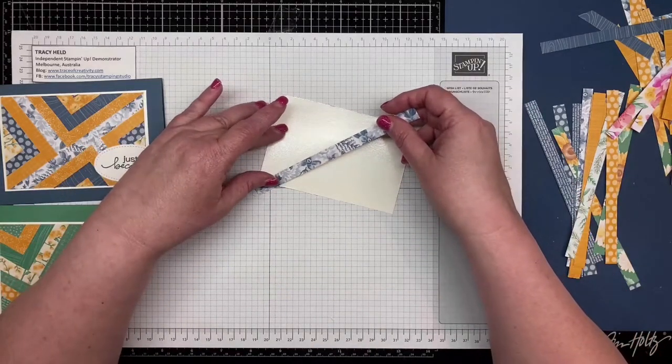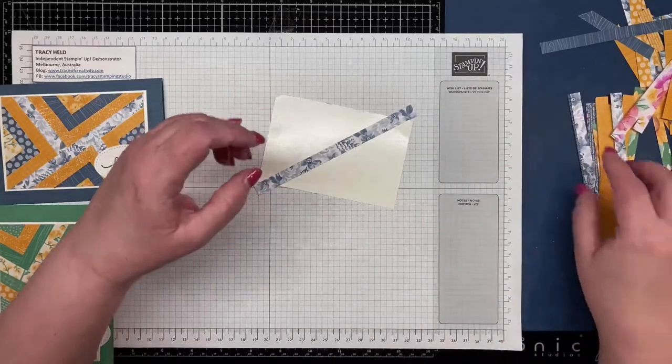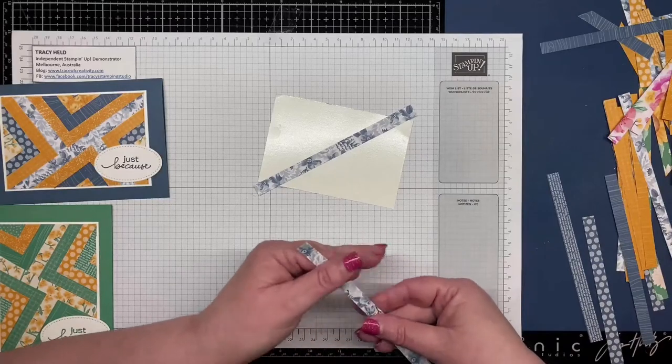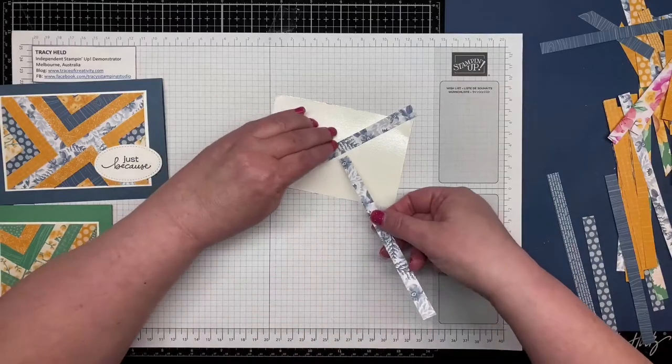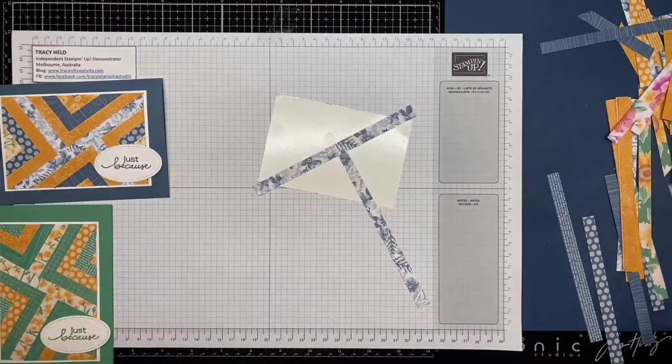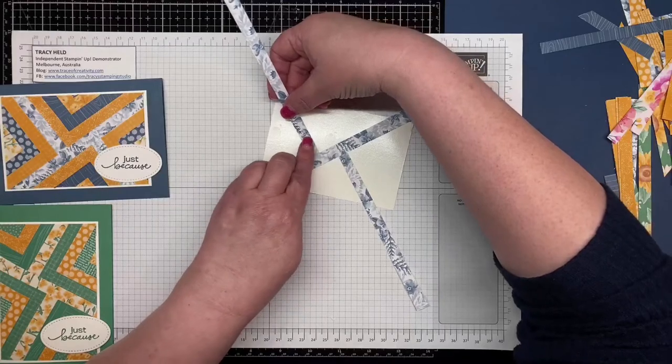So you're going to start with putting one strip across, and then we're going to just butt the edge of that against that strip, and I'm dividing my initial piece into four different triangles.